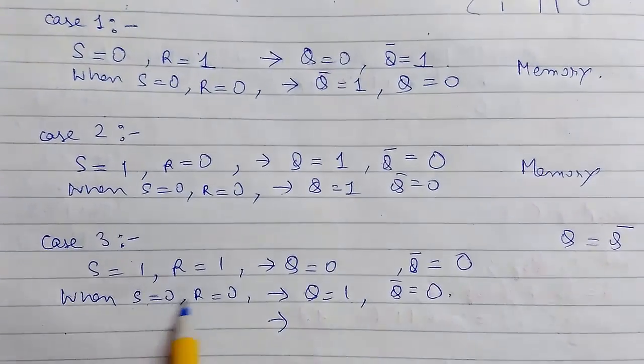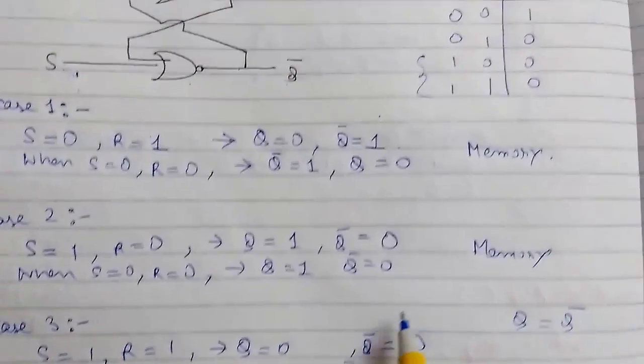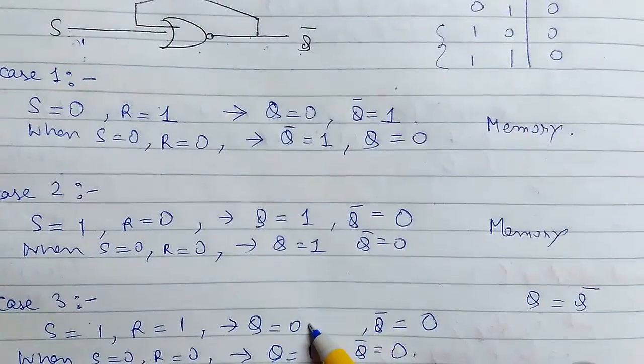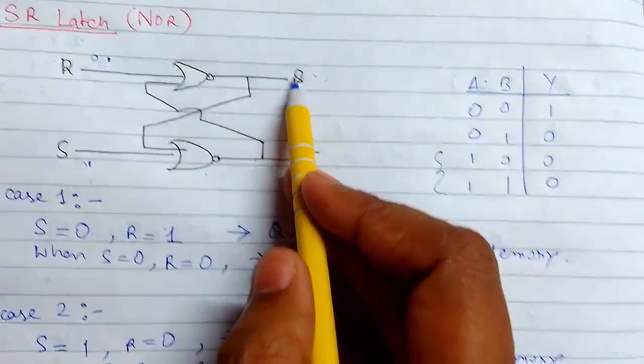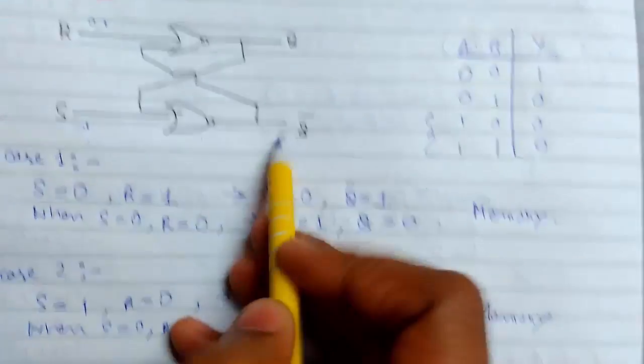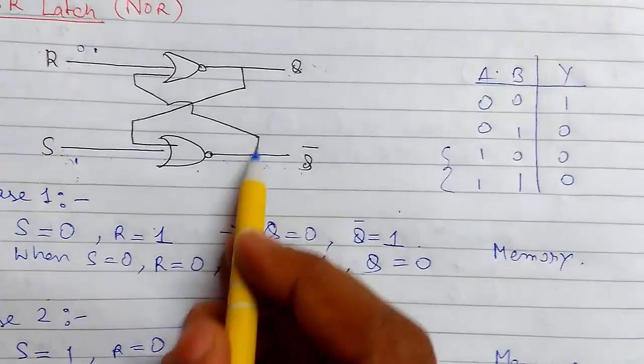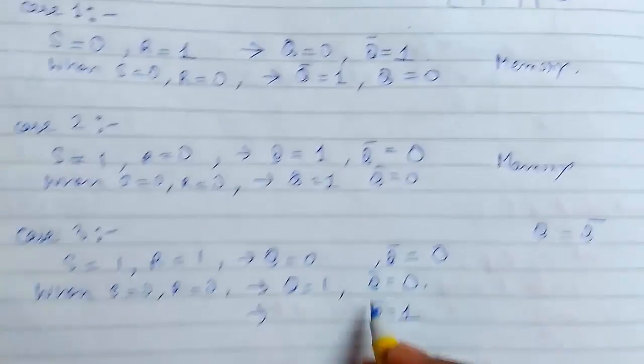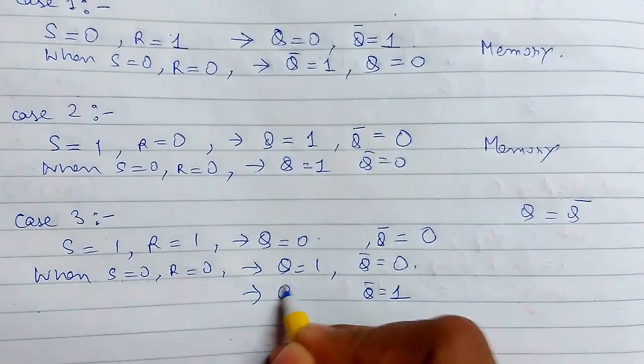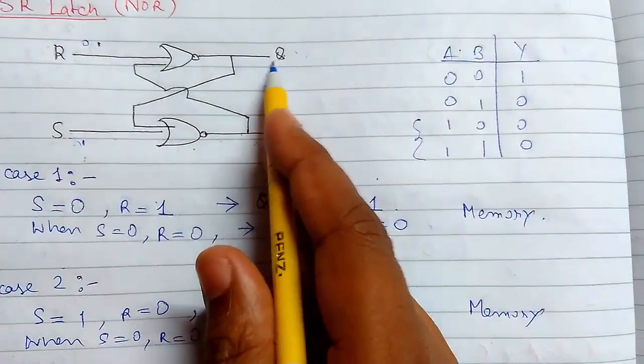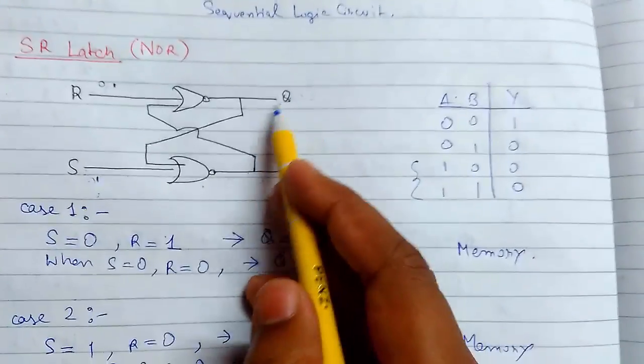So now we will remove the inputs and see what will be the output. Suppose first we consider this as 0, for this case, we consider this as 0, so 0, 0, 0 is 1, so Q bar will be 1 and 1 passes here, so 0, 1 is 0. So this will be 1 and this 1 passes here, so 0, 1 is 0.